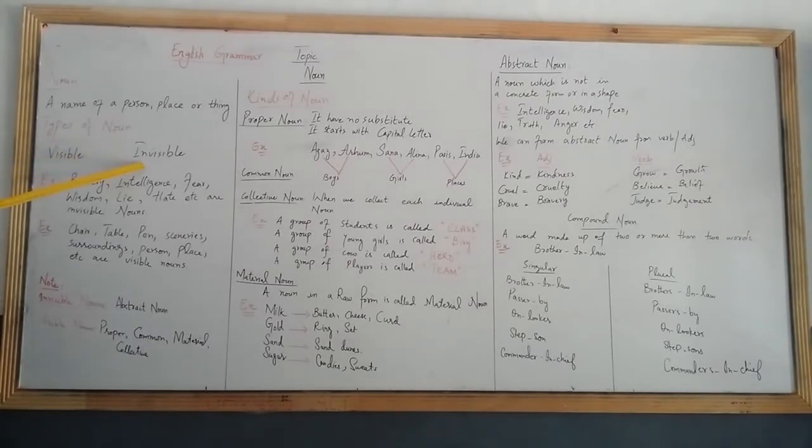Invisible nouns are feelings. For example: Bravery, Behadiri, Intelligence, Zahana, Fear, Form, Wisdom, Akadmandi, Life, Truth, Hate, Nafrat. These are things you cannot see.